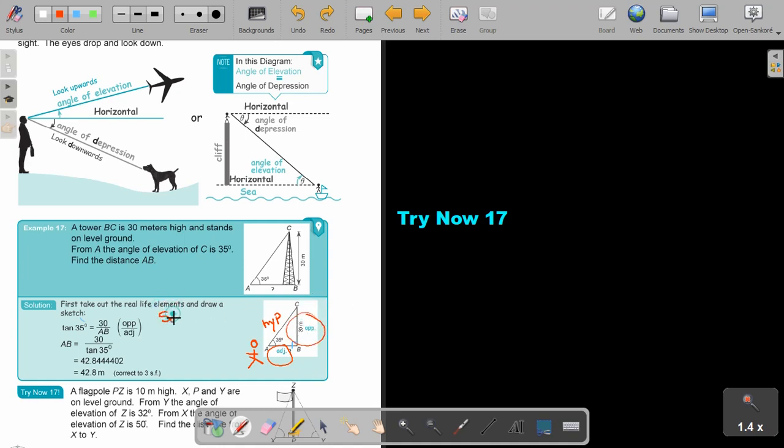If I think of the word SOHCAHTOA, it's opposite and adjacent, so it will be tan. So tan 35, it's 30 over opposite, opposite is 30, adjacent is AB. And can you remember if the unknown was at the bottom, it ends in a division. So it's AB equals 30 divided by tan 35. And then I press it on the calculator, and this is my final answer.